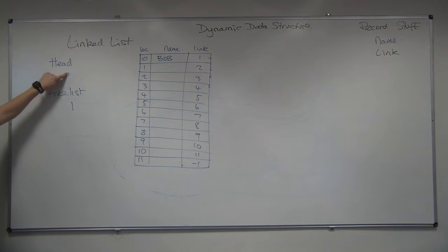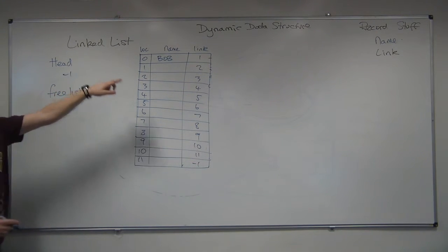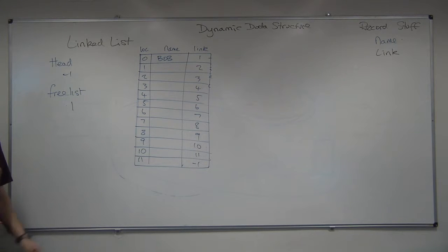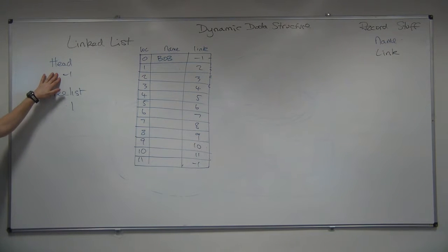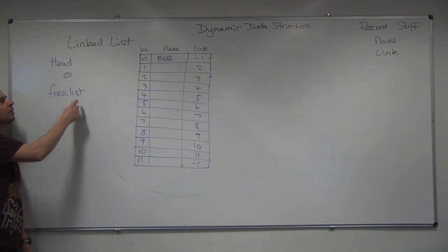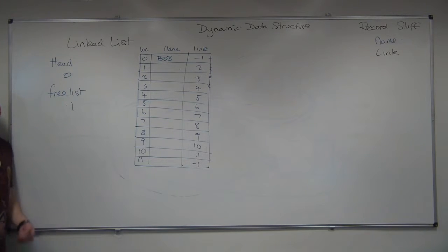The head, which was pointing at minus 1, now has to point to Bob. There's nothing in the list. So if there's nothing in the list and I've added one item, then Bob needs to point to nothing. Because there's nothing following it. And the head now points to null.